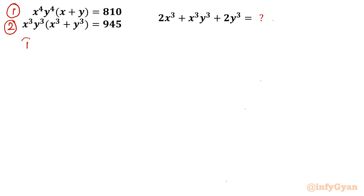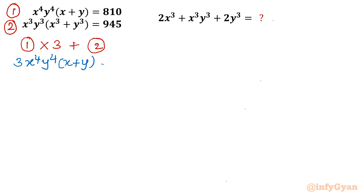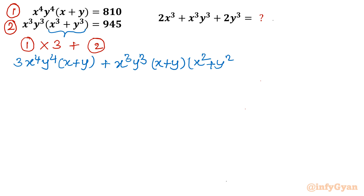The first operation I will do is: Equation 1 times 3, plus Equation 2. For Equation 1 multiplied by 3, I write 3x⁴y⁴(x + y) as the LHS, plus the LHS of Equation 2. Here I will use the algebraic identity a³ + b³ = (a + b)(a² + b² − ab), so I write x³y³ · (x + y)(x² + y² − xy).